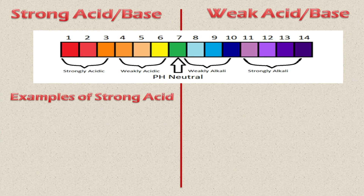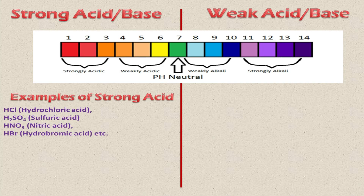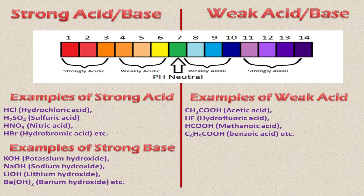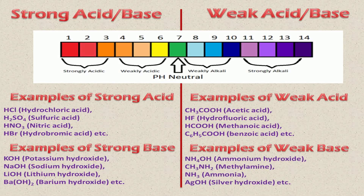Examples of some strong acids are hydrochloric acid, sulfuric acid, nitric acid, and hydrobromic acid. Examples of some strong bases are potassium hydroxide, sodium hydroxide, lithium hydroxide, and beryllium hydroxide. Examples of some weak acids are acetic acid, methanoic acid (also known as formic acid), and benzoic acid. Examples of some weak bases are ammonium hydroxide, methyl amine, ammonia, silver hydroxide, etc.